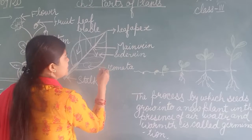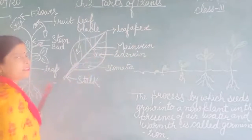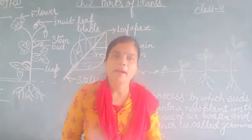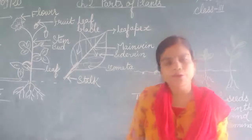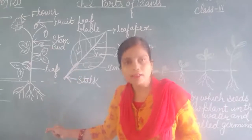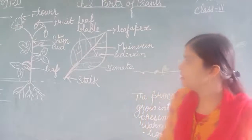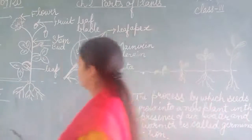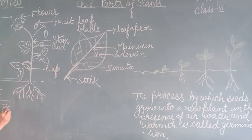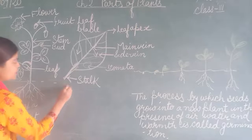There is no need to show the stomata in the leaf diagram. So we have to show the leaf apex, main vein, side veins, petiole, and lamina. These are the parts of a leaf, or the structure of the leaf. When asked to draw the diagram of parts of a plant, you draw the plant and show its parts. When asked about the part of a leaf, you draw a leaf and show its different parts.